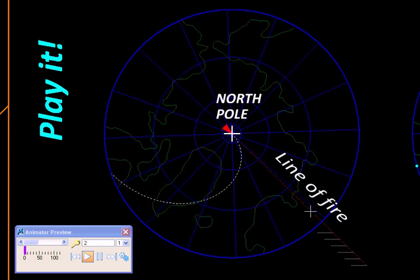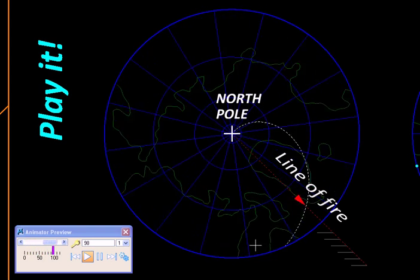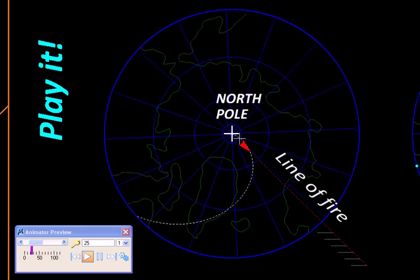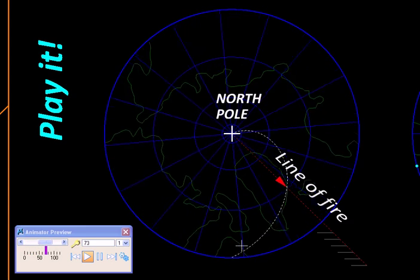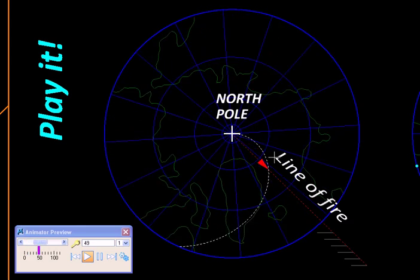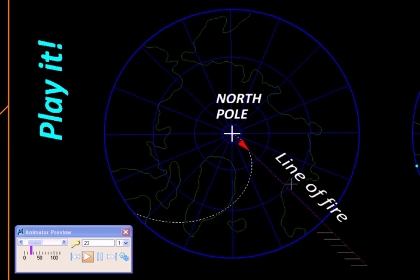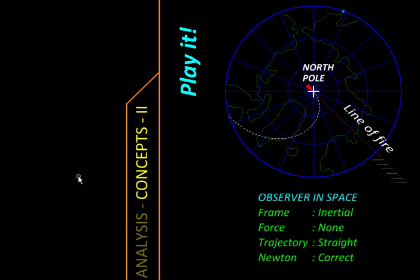What is interesting to watch here is the shell's relative path as traced on the Earth. This dotted white curve shows all the places or connects all the places that come under the shell as it progresses on its trajectory.